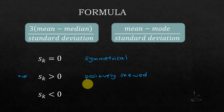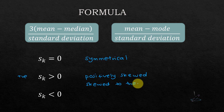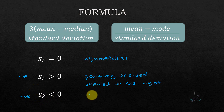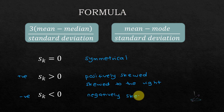You can also say that positively skewed data is skewed to the right. If SK is less than zero, the value is negative, so the distribution is negatively skewed, or skewed to the left.